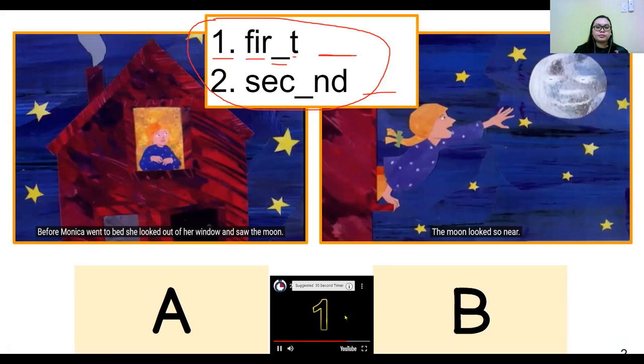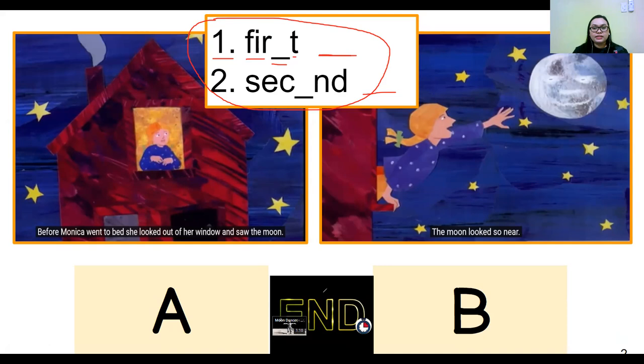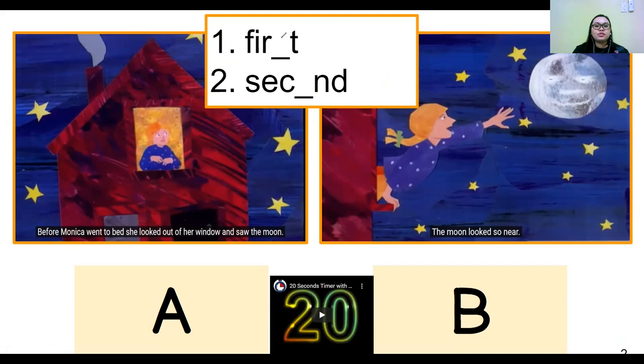I hope you are done answering. If not, you can pause this video to answer. What's the missing letter for the first one? It's S. And the second one? It's O. The correct answer for first is letter A, and the second one is B.